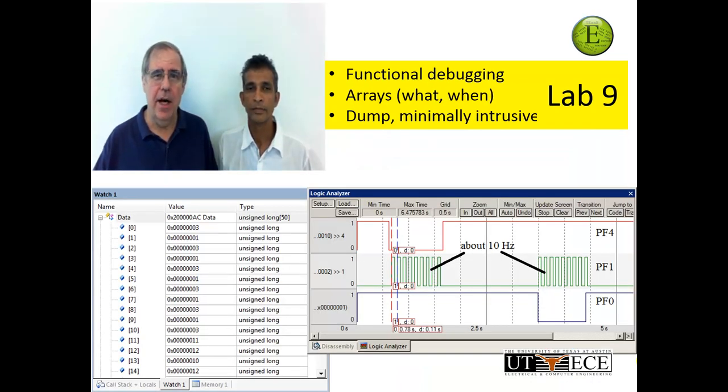And then in lab 9 was our first effort of proving that our software works. Embedded systems, as you know, are deployed in situations where life-critical functionality must be guaranteed. And so we introduced this idea of functional debugging. We used an array to capture the input, the output, but not only what they were, but when they occurred. And so this was a minimally intrusive dumping into an array such that we could demonstrate and verify that our software and hardware was working as intended.